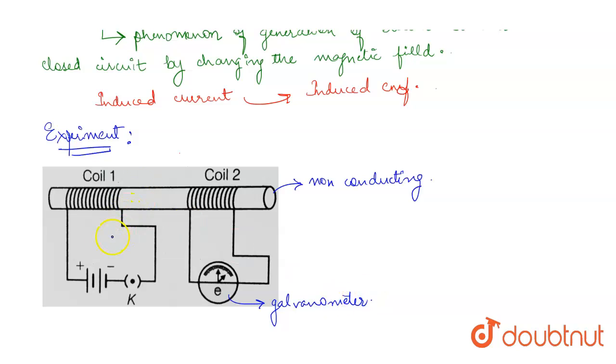Now plug in the key. When we plug in this key, we will observe there is some deflection in the galvanometer. This needle quickly jumps to one side and then quickly returns to zero. This indicates that there is some momentary current in coil two.